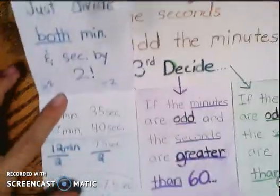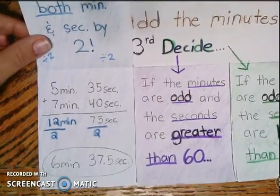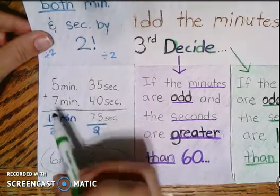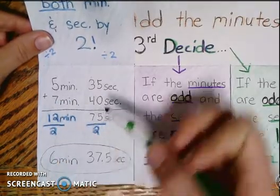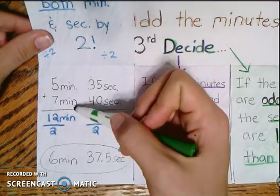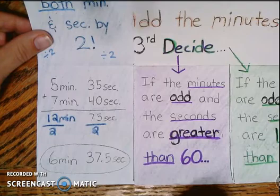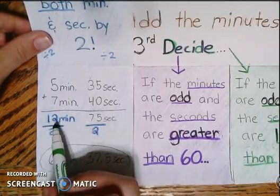And so here is what the example looks like for your reference. And I know that we've done a lot of these in class. But here we've got 5 minutes 35 seconds and 7 minutes 40 seconds. I added the seconds and got 75. And then I added the minutes and got 12. Now, if the minutes are even, 12 is already even.